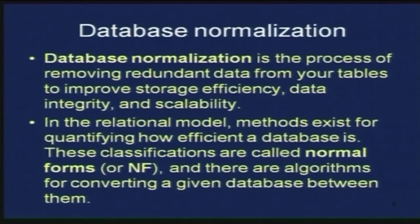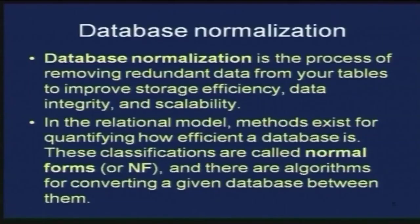In the relational model, there are methods to quantify the efficiency of a database. The efficiency of a database depends upon the procedures used for determining normalization. The different classifications of how efficient a database is are called normal forms, abbreviated as NF, and there are algorithms available for converting a database between the different normal forms — first normal form, second normal form, and so on.